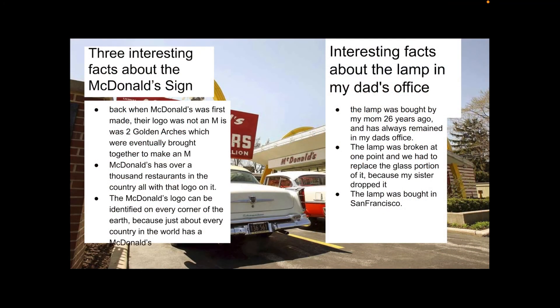For the three interesting facts about the McDonald's sign: Back when McDonald's was first made, their logo was not an M. It was two golden arches, which were eventually brought together to make an M. McDonald's has over a thousand restaurants in the country, all with that logo on it. And the McDonald's logo can be identified on any corner of the earth, just because of how popular McDonald's is in every country.